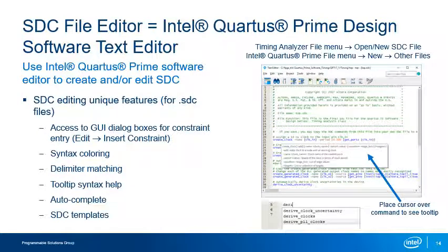To easily create and store SDC constraints, the Timing Analyzer features an SDC file editor, accessed through the Timing Analyzer interface by selecting New SDC file from the file menu. The SDC file editor is identical to the Intel Quartus Prime text editor. If you create a file using the Quartus Prime text editor and give it the .sdc file extension, you'll have the same features available as within the Timing Analyzer tool.